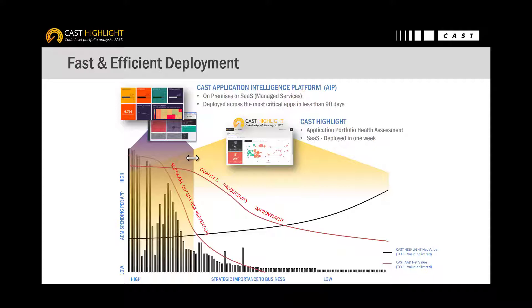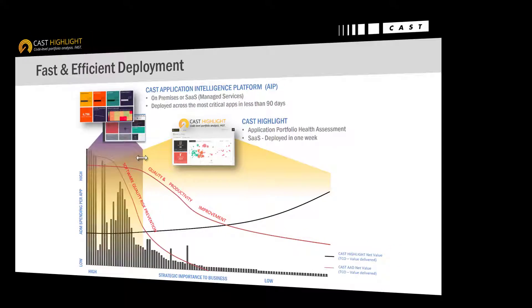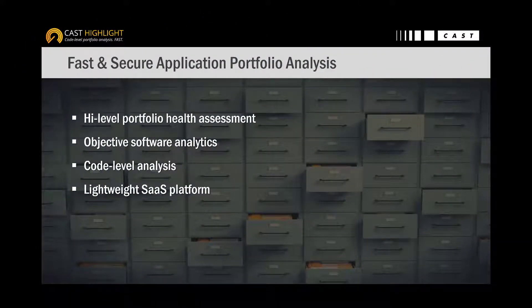The Application Intelligence Platform enables in-depth investigation at both code and system levels. Although these two solutions can work independently, you'll get the best value of CAST expertise by combining CAST Highlight as your continuous application portfolio analysis and AIP to enable investigation, modernization, as well as remediation to ultimately improve software and architecture.